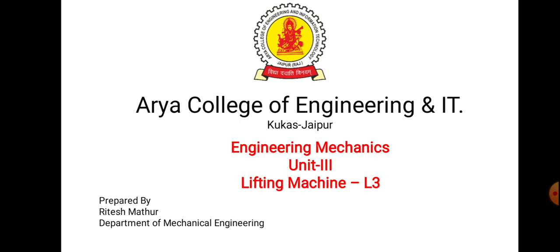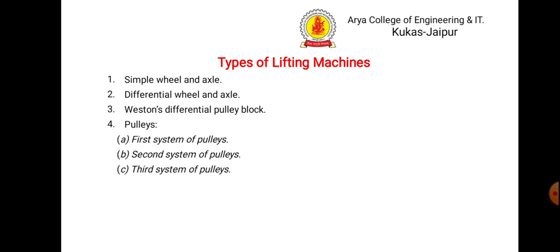we will discuss the applications of the lifting machine, or we can say the types of lifting machine. The various types of lifting machines are: simple wheel and axle, differential wheel and axle, Weston differential pulley block, then pulleys — the system of pulleys. In this lecture, we will discuss only the wheel and axle, differential wheel and axle, and differential pulley block.